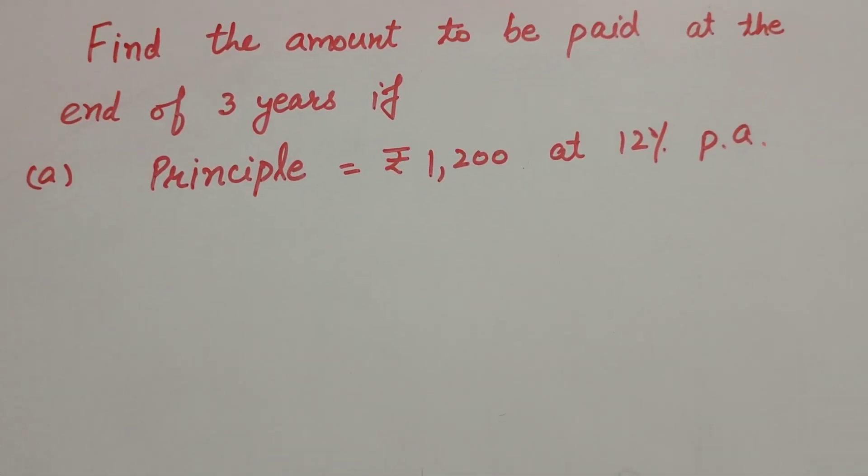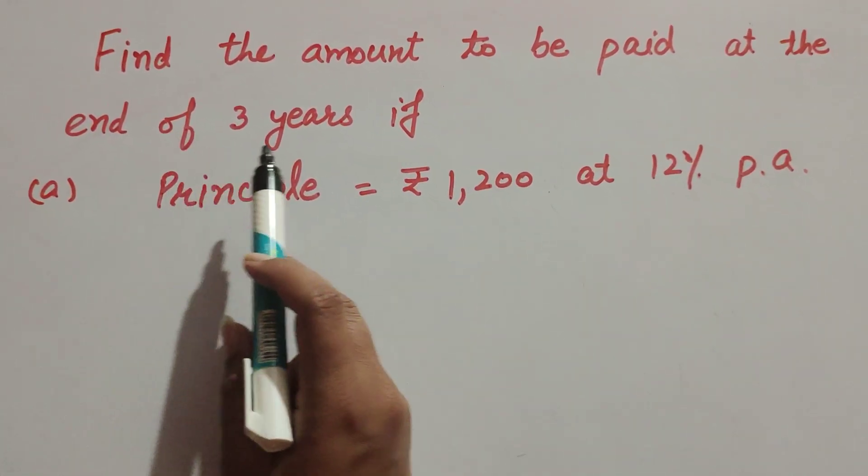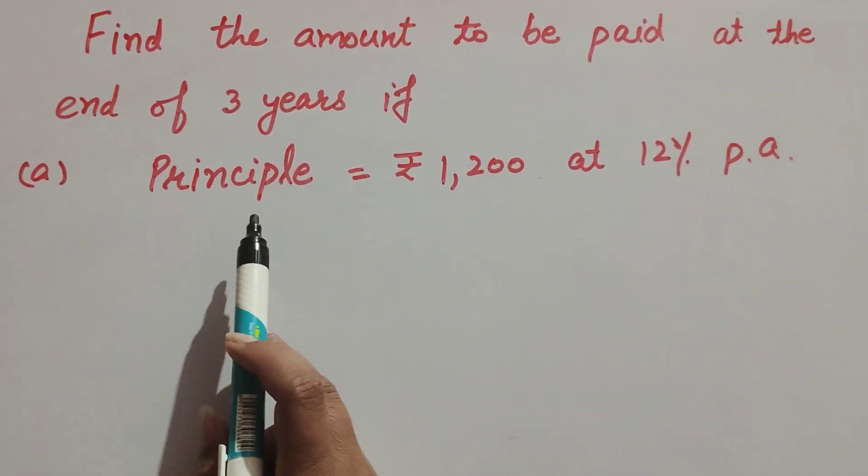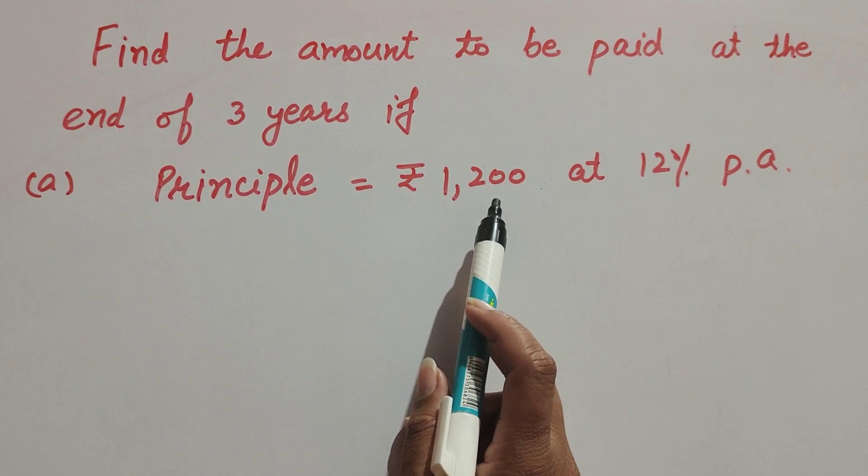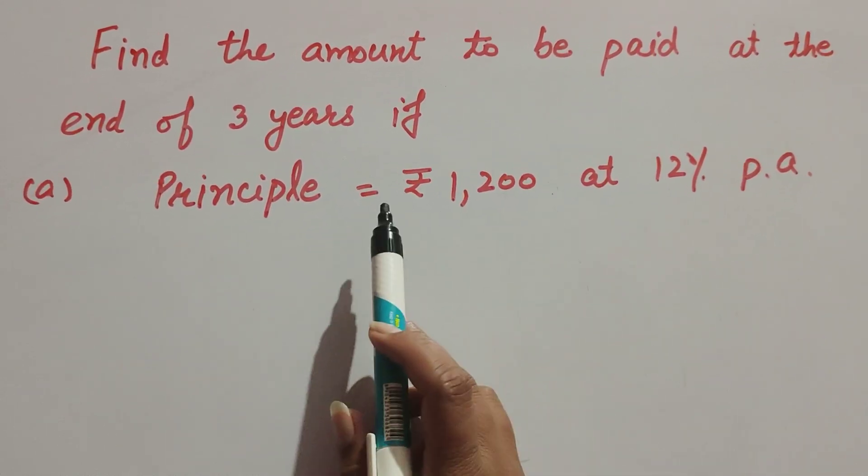Hello friends, welcome to my channel. In this video we discuss finding the amount to be paid at the end of three years if principal is equal to rupees 1,200 at 12 percent per annum.